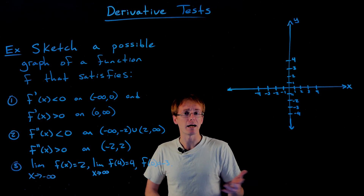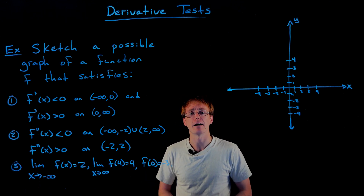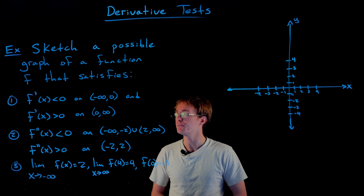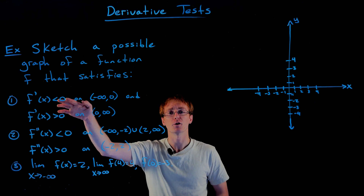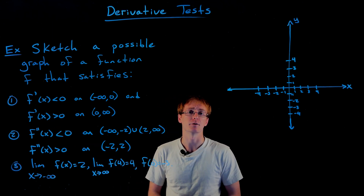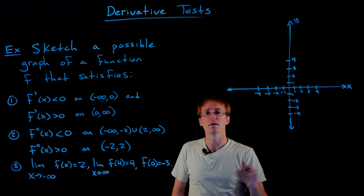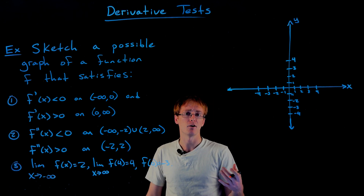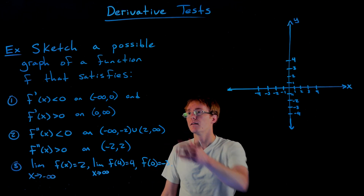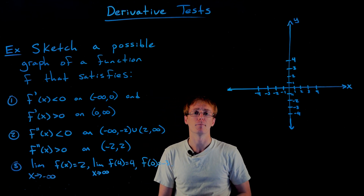Before we start graphing, let's interpret what all these conditions tell us about the graph of f. The first derivative tells us where our function is increasing and decreasing. When the first derivative is negative, the function is decreasing; where the first derivative is positive, the function is increasing. I like to break these into intervals at the bottom of the graph — intervals where we are increasing or decreasing and concave up or concave down.